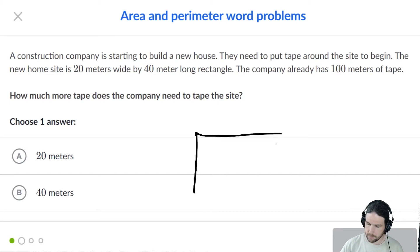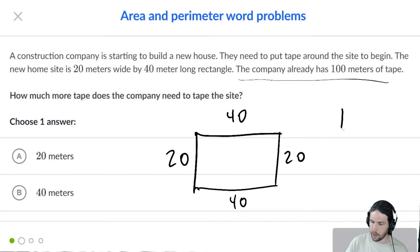It's a rectangle. Shut up. My rectangles are perfect. And it is, let's see, 20 meters wide by 40 meters long. And it says, though, that the company already has another 100 meters of tape. They are throwing an extra level of complexity into this problem. It is no longer just find the perimeter. The perimeter is 40 plus 20 is 80 times 2 is 160.